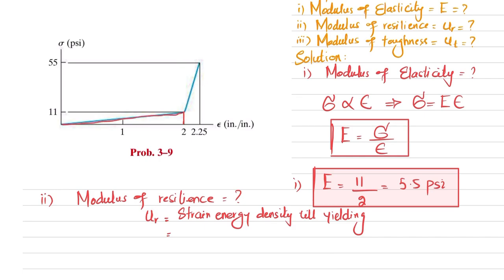The area of the right-angle triangle is one-half times stress times strain, which is one-half times 11 times 2. When you solve this you get 11 psi. So the modulus of resilience for this material is 11 psi.